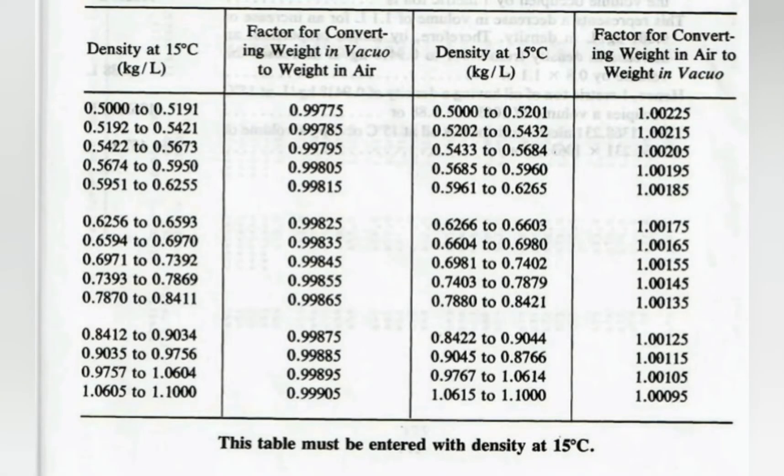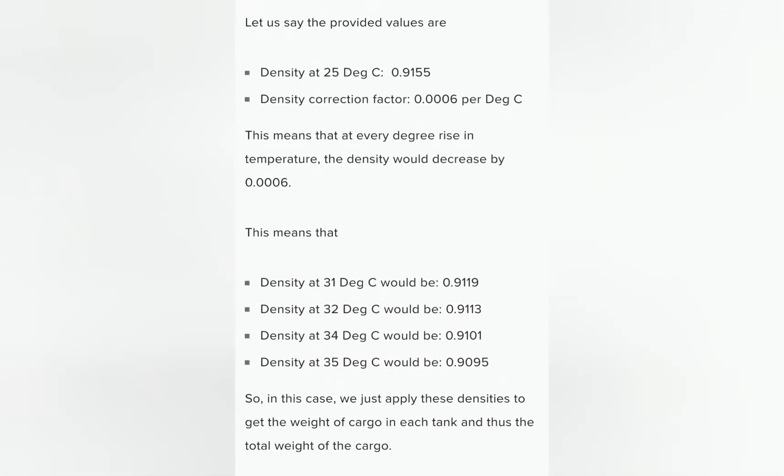Let us say the provided values are: density at 25°C is 0.9155, density correction factor is 0.0006 per degree Celsius. This means that at every degree rise in temperature, the density would decrease by 0.0006.